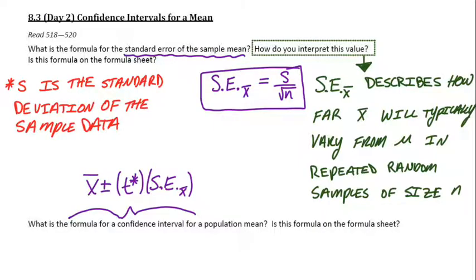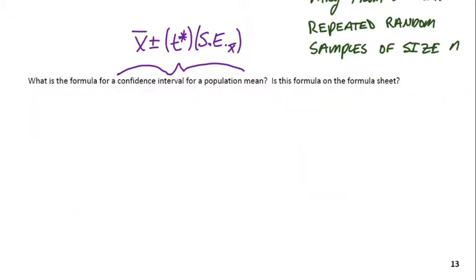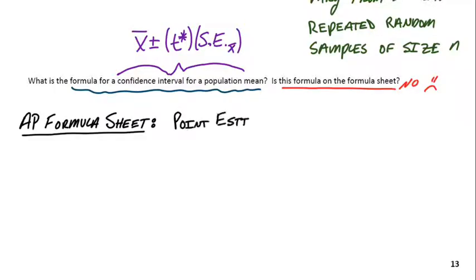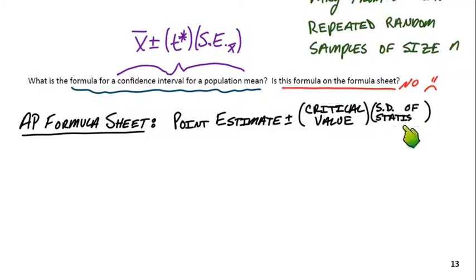Is it on the formula sheet? No, it actually isn't. There's some valuable stuff on the formula sheet, not including this formula. So the formula for a confidence interval for a population mean. The other way we could write it would be to do it without the standard error of X bar. We could just write little s over square root of N. Unfortunately, it's not on the formula sheet either. So what actually is on the formula sheet in regards to confidence intervals? They say point estimate plus minus the critical value times standard deviation of statistic.